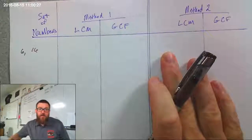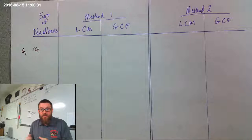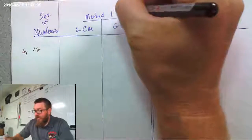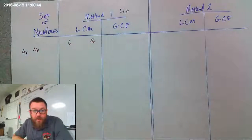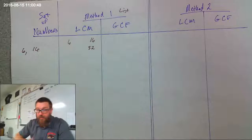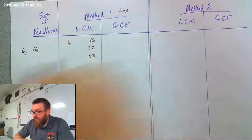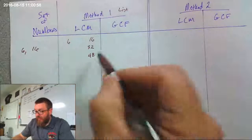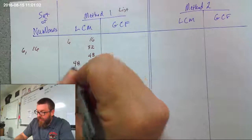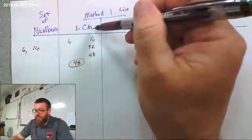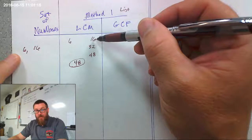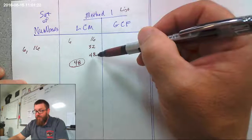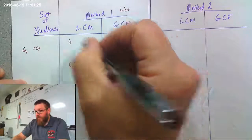Let's look at a trickier pair of numbers: 6 and 16. The first method — we make a list of the multiples for the lowest common multiple. Starting with the bigger number: 16, then 16 times 2 is 32, add 16 again to get 48. Does 6 go into either of those? 6 does go into 48. So 48 is my answer. The lowest common multiple is asking for the smallest number that both of these go into. I started with the biggest number, wrote down the multiples, and found which one the smaller number also goes into.